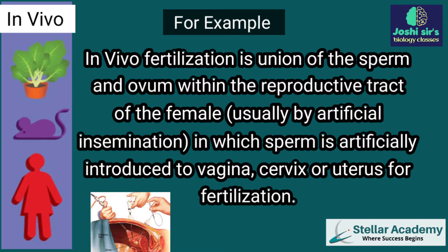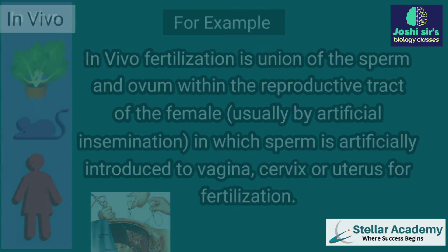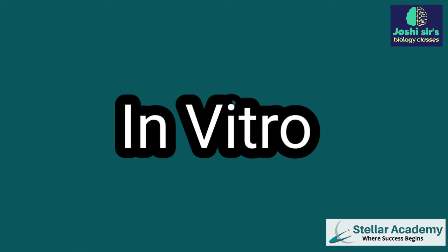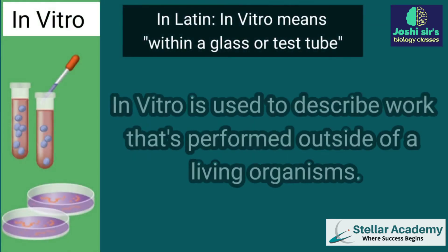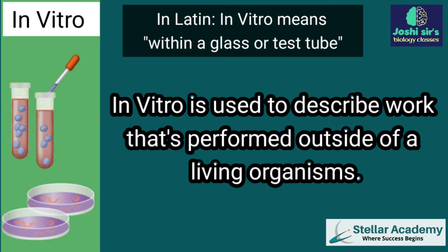In vivo fertilization is one in which sperm is artificially introduced to the vagina, cervix, or uterus for fertilization — usually done with artificial insemination. In Latin, in vitro means 'within a glass or test tube.'